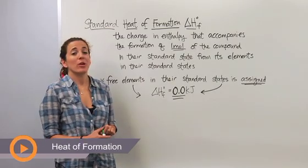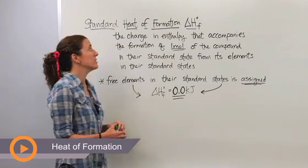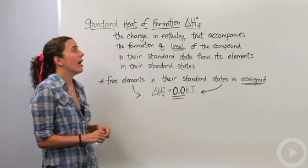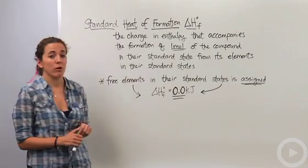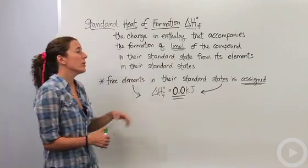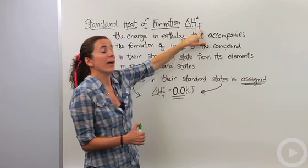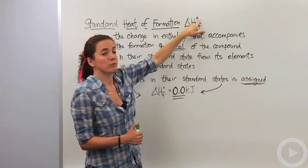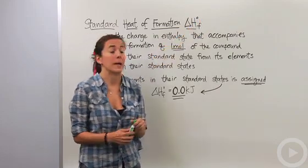Alright, so when you're dealing with different types of thermochemical equations, you're going to be dealing with different types of delta H's or heat or enthalpy changes. We're going to talk about the heat of formation or the formation of a substance. So we're going to note that delta H with a subscript of F saying we're forming something. That little zero sign says we're forming something in its standard state. I'll talk about that in just a second.